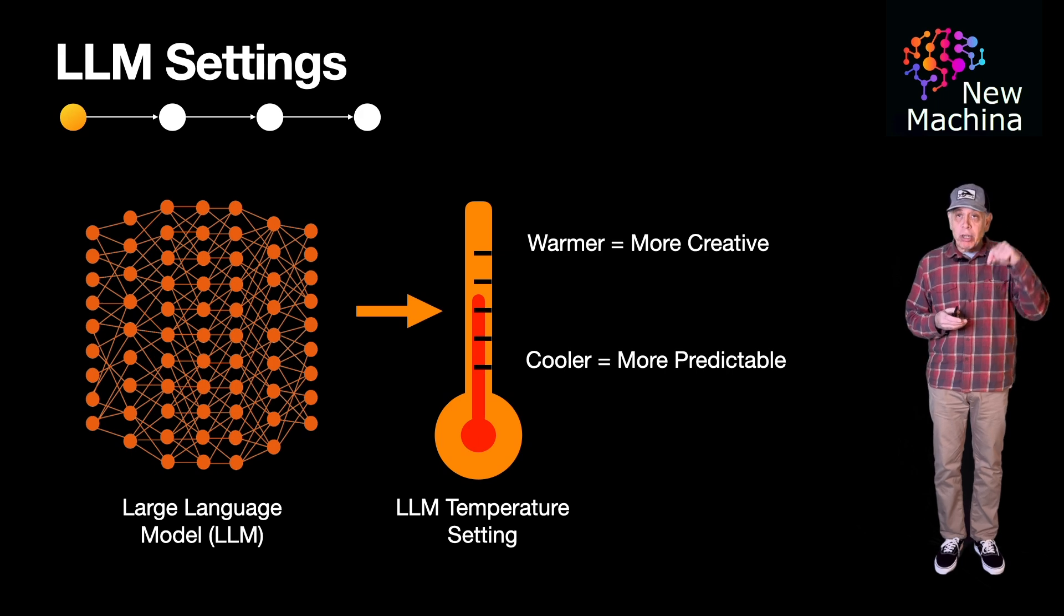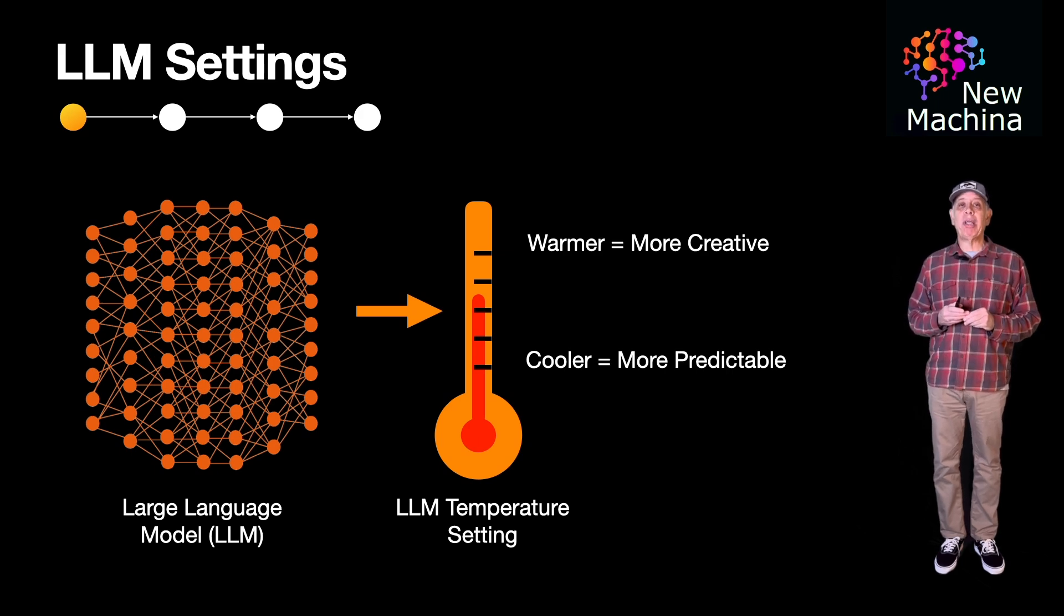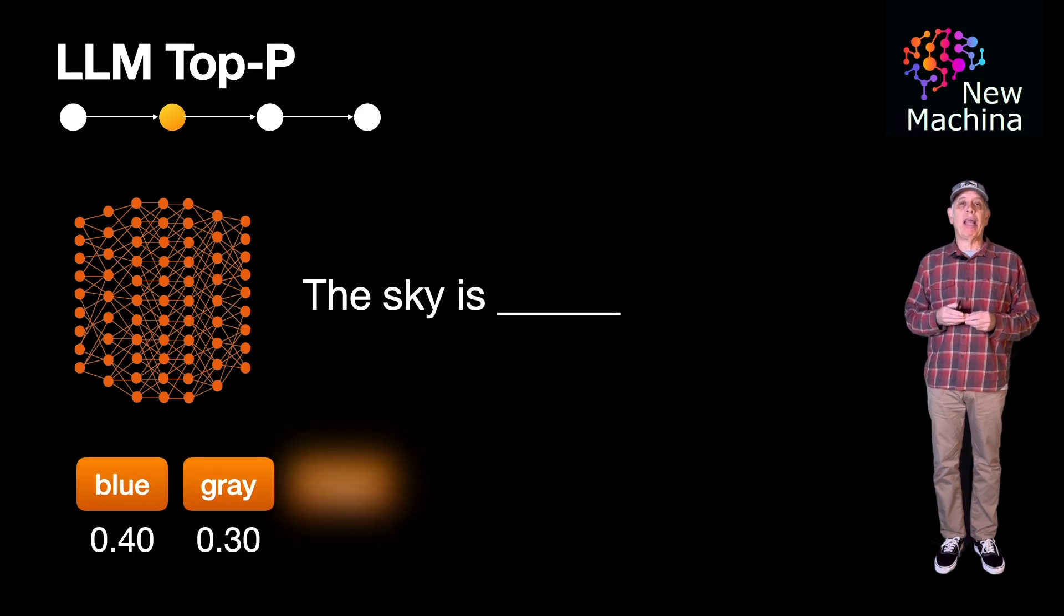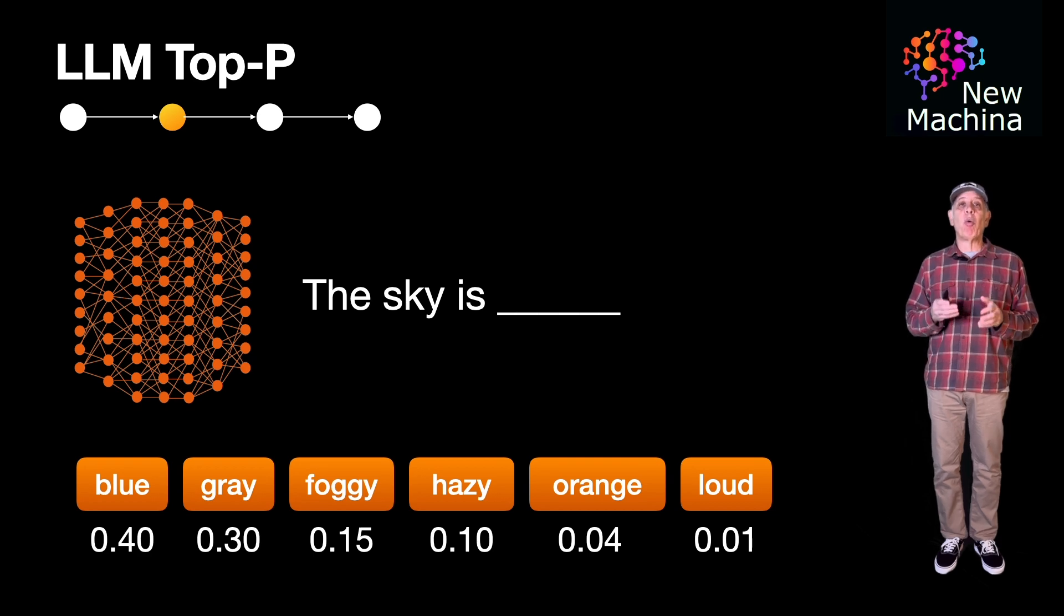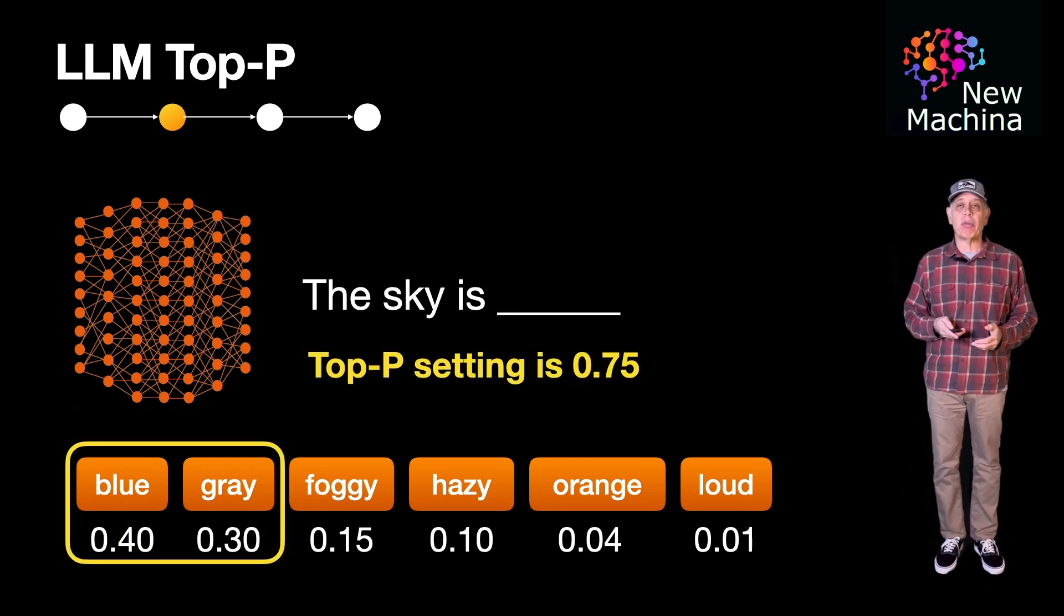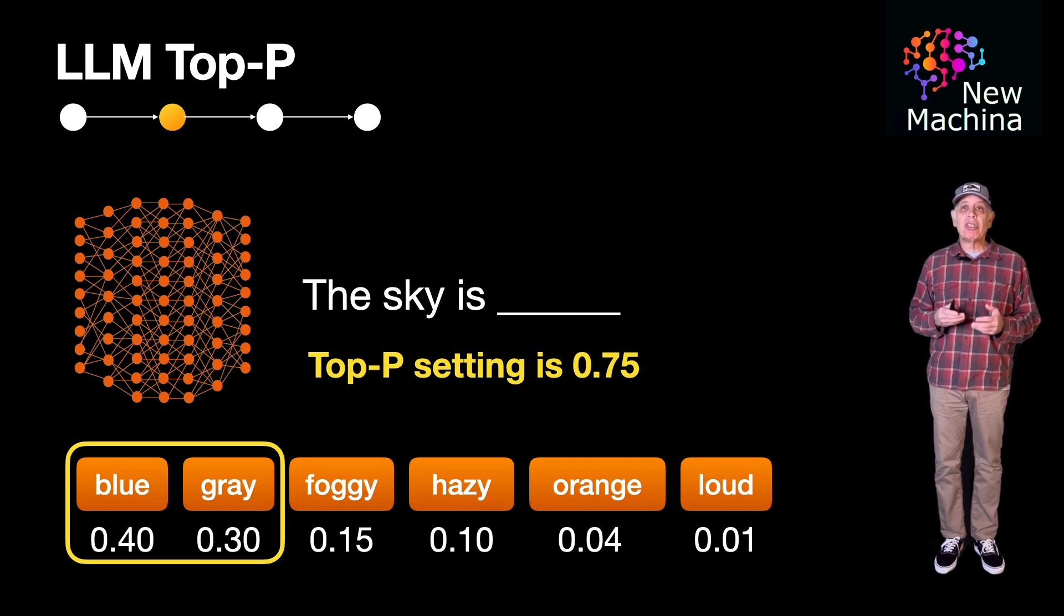So what exactly do Top-P and Top-K do for you? Well, for an LLM, Top-P controls the possible list of candidate words from which the next word can be sampled. Top-P limits the words in the candidate pool that will be considered by summing the top word probabilities, and it only considers word candidates whose collective sum is equal to or less than the Top-P setting value.